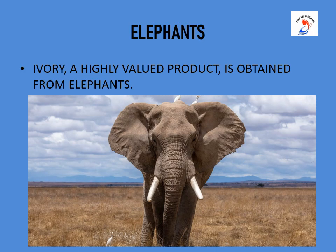Now we are going to talk about elephants. Elephants are very huge and beautiful animals; they have two tusks which are very important. We get a product called ivory from the tusks of elephants. Ivory is a highly valued product obtained from elephants.